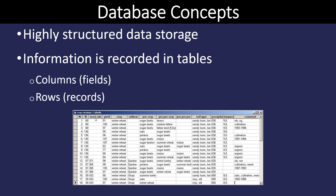Across the top are field names instead of letters like in Excel. So in this example we can see fields like seed rate, yield, crop, and cultivator. Those are the fields. And then the rows going across we're going to call records. So each individual record is listed in a row going across.